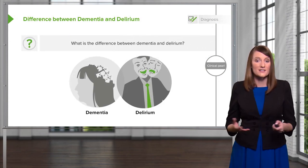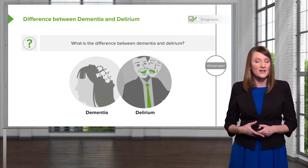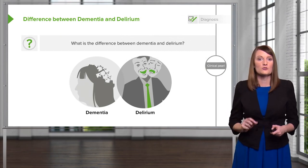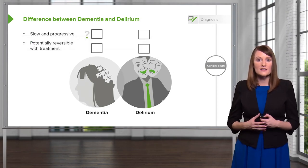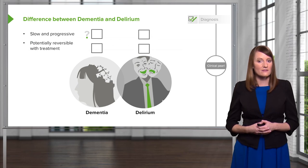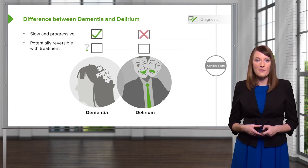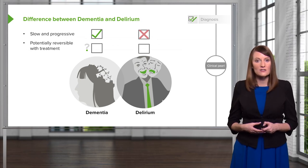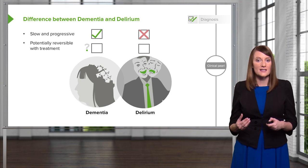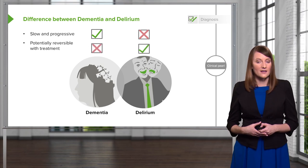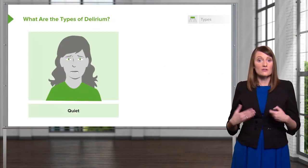What is the difference between dementia and delirium? It's really important that you understand the nuances between the two. Dementia is a slow and progressive disorder. Delirium, on the other hand, is potentially — and more accurately, easily — reversible with treatment. Delirium is usually very reversible.